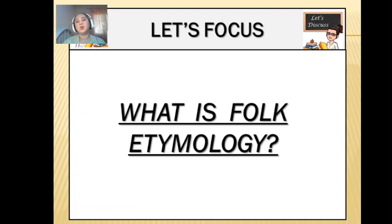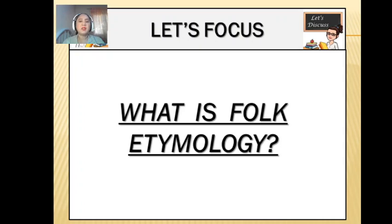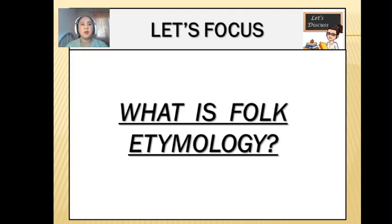So what is folk etymology? Folk etymology came from two words: folk, which means popular, and etymology, which means the study of its history. Folk etymology is also referred to as popular etymology. It is a change in a word or phrase resulting from a mistaken belief about its composition or meaning. When we talk about folk etymology, it is the change of the word as time goes by, possibly because of need or because of mispronunciation.